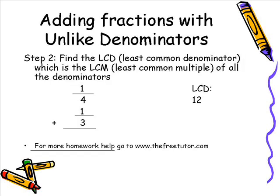Step 2: Once you have lined your fractions up, you must find what is called the least common denominator, or the LCD. The LCD is the least common multiple, or LCM, of all denominators. For our problem 1/4 plus 1/3, the denominators are 4 and 3. The least common multiple of 4 and 3 is 12, so our least common denominator will be 12. Once you have found your LCD, you are ready to proceed to step 3.